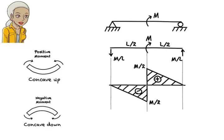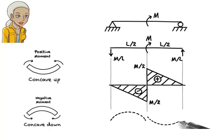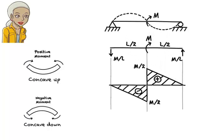Now we should be able to draw the elastic curve using the information embodied in the moment diagram. The beam bends concave down in the left half, since moment is negative there, but the right half of the beam bends up, since moment is positive there. Putting these two pieces together, we end up with the entire elastic curve for the beam.